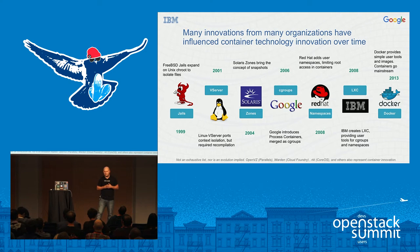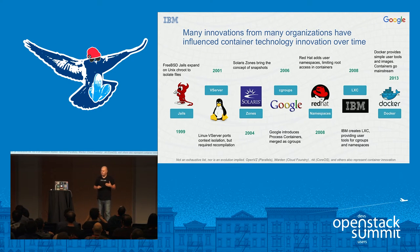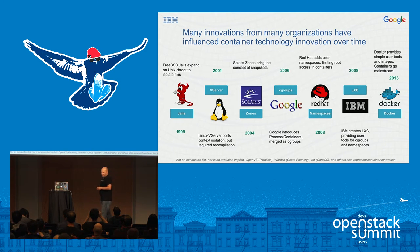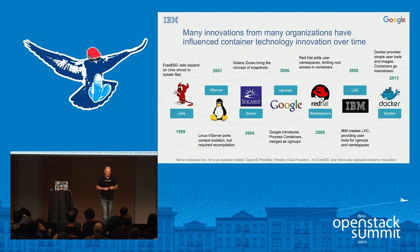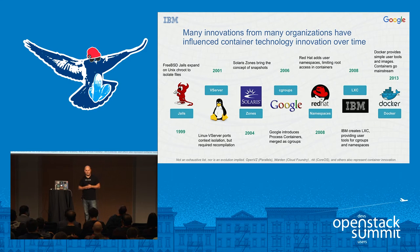Container technology has been evolving for the last 17 or even more years, with lots of great ideas coming together. Going back to 1978-1979 with chroot, isolating where the file system starts. FreeBSD, 17 years ago, extended that to other resources. Linux took those ideas and tried to port them over, but that required recompiling the kernel, and many folks using distributions didn't have the ability or desire to do that.